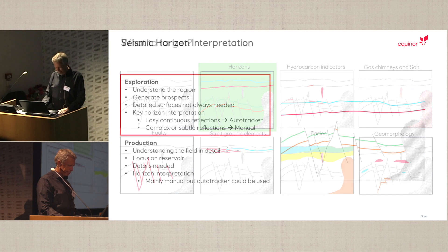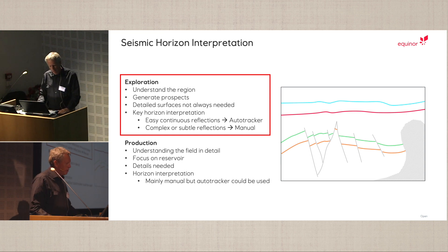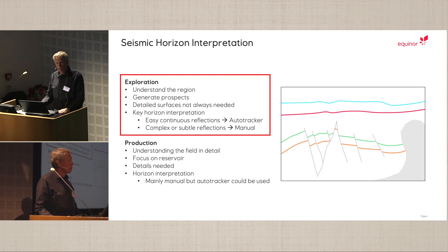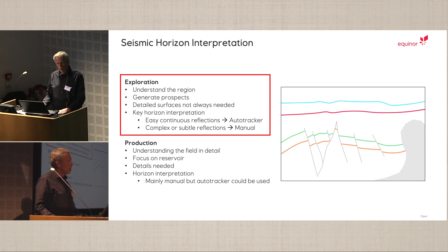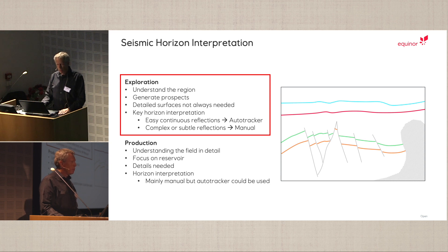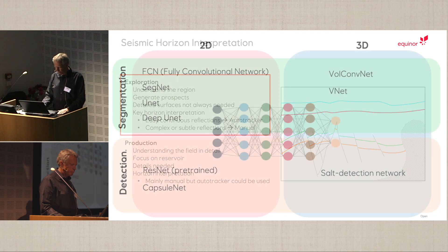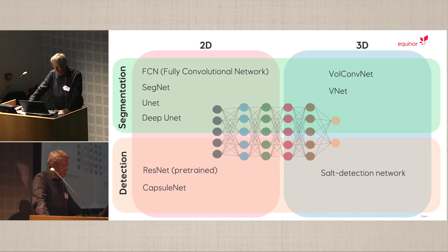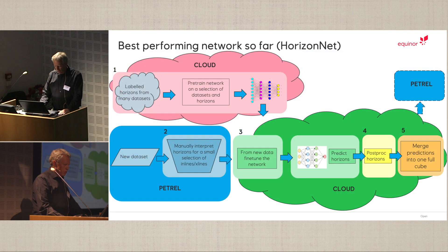Horizon interpretation is done in two areas of the company: exploration and production. In production we focus on the reservoir zone in detail, but in exploration we're more occupied with regional understanding using key horizon interpretation. Since I'm in the expert technology research part, it was natural to pick key horizon interpretation as our goal. We tested many neural network architectures for segmentation, detection, 2D and 3D, and UNet is not surprisingly the one showing the best results.